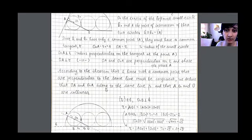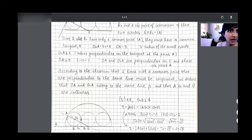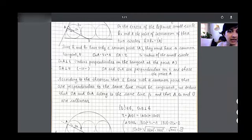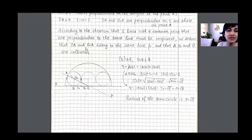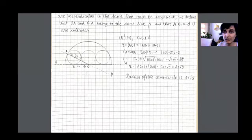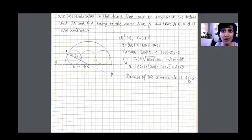And then she made her argument for why they must be collinear later on. So she says, according to the theorem, that two lines with a common point that are perpendicular to the same line must be congruent. We deduce that OA and O1A belong to the same line P and that A1, O1, and AO are collinear. So she has now described why these are collinear and only then does she go on to do her Pythagoras and get the correct answer of one plus root five. So well done, Xenia, really good solution and it's very well laid out.